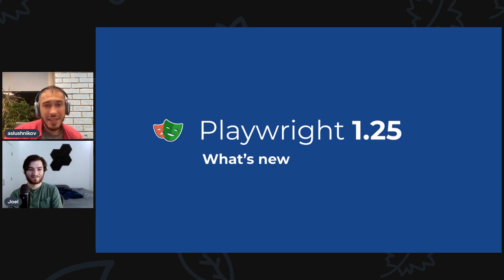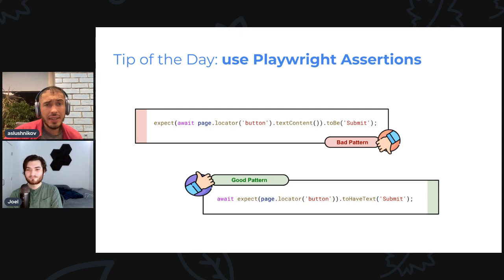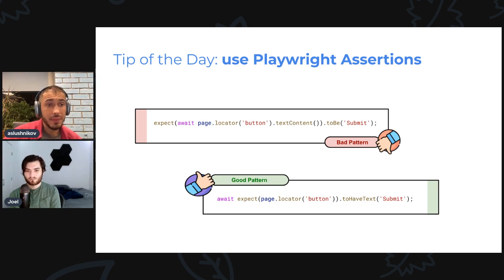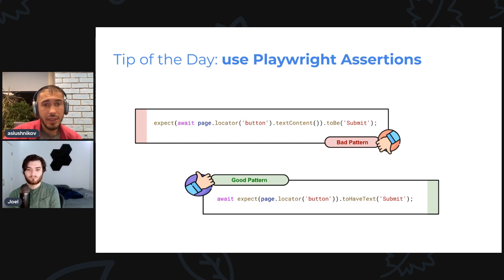As usual we have a tip of the day, and this time it's about using Playwright assertions. The tip is to avoid using straight Playwright APIs — for example, the bad pattern is to use `page.locator().textContent()` and assert it to be some text. This is a bad pattern because the text content of a button can be racing — some JavaScript or React might be changing it, and you might not be at a good moment to compare the value.